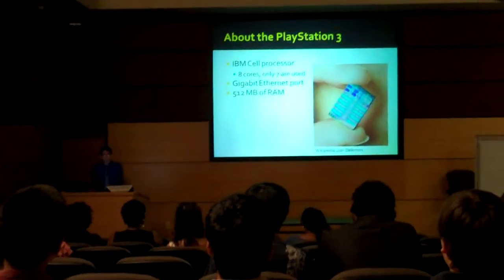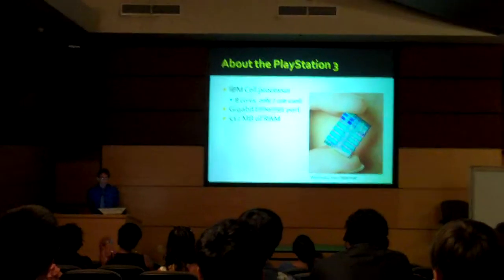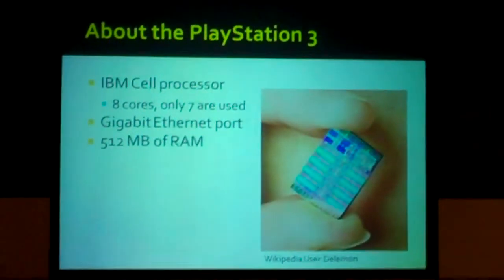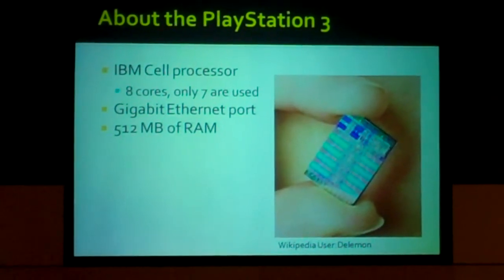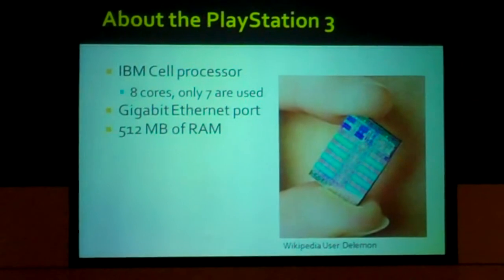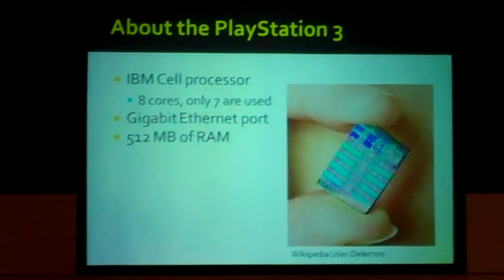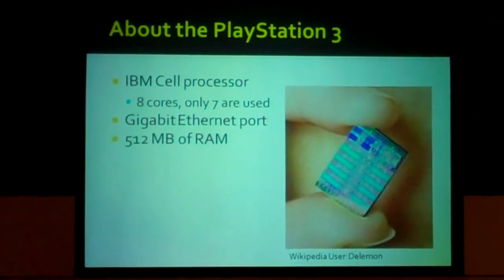About the PlayStation 3. It has an IBM cell processor. Eight cores inside the processor. Only seven of those are used. That's in case one of the cores goes bad, there's a replacement. Now each of those green bars is a core which can do... So this one processor can do eight mathematical calculations at one time.